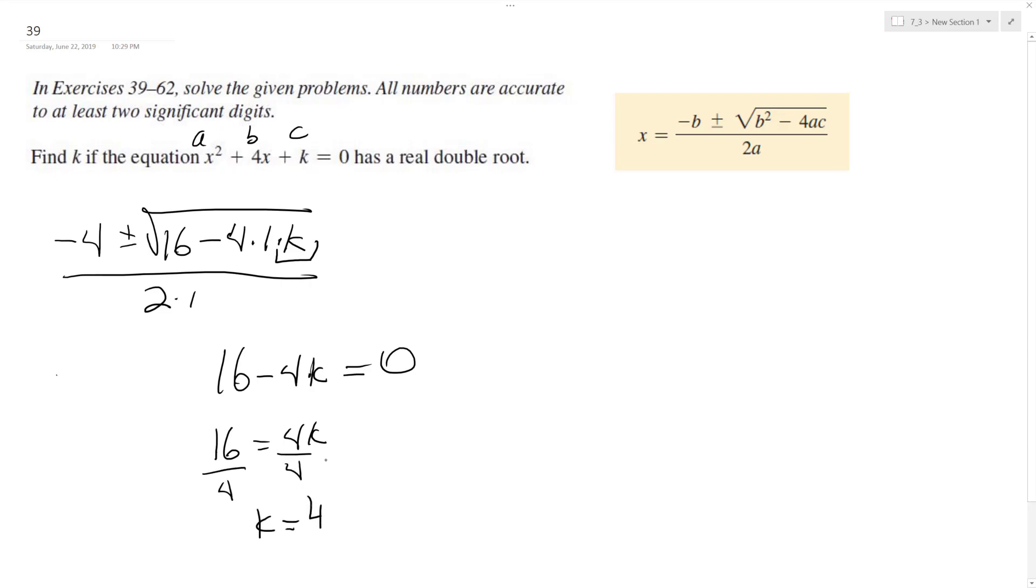So this is going to be x squared plus 4x plus 4 equals 0. Does that make sense? So x plus 2 times x plus 2. If you factor this back, you'll get the original one.